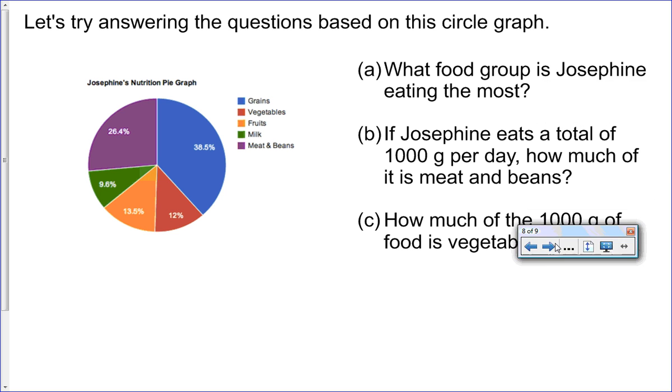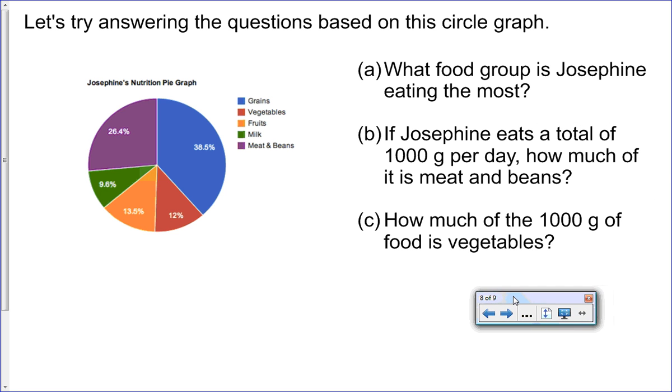I'm going to leave this for you to try at home and then we're going to discuss this in tomorrow's class. I want you to try to answer these three questions that are based on this circle graph. Question A: what food group is Josephine eating the most? Question B: if Josephine eats a total of 1000 grams per day, how much of it is meat and beans? And question C: how much of the 1000 grams of food is vegetables?